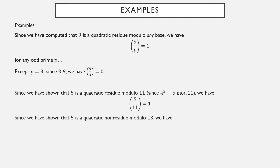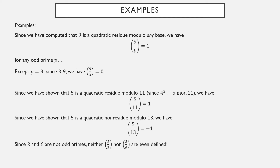Five is not a quadratic residue modulo 13, so the Legendre symbol five over 13 is equal to minus one. Two and six aren't even odd primes — six isn't a prime, and two is a prime but it's not odd. So the Legendre symbol five over two or the Legendre symbol five over six don't even have a value; they're simply not defined. The number on the bottom must be an odd prime or this symbol doesn't exist at all.